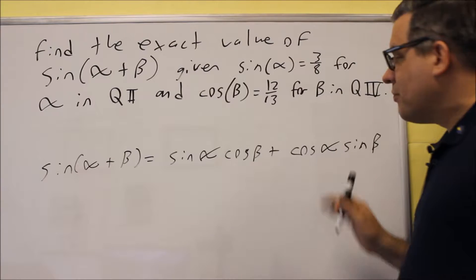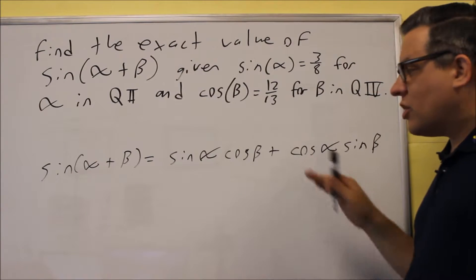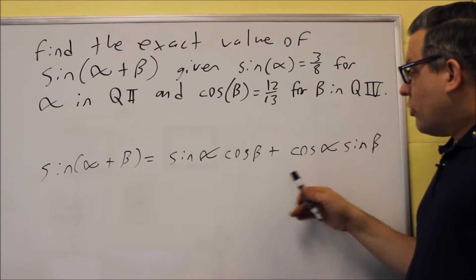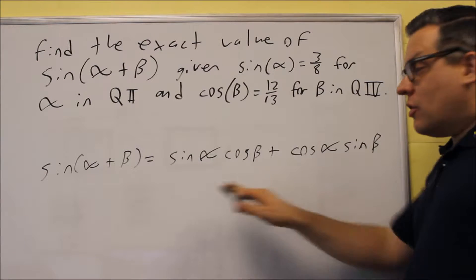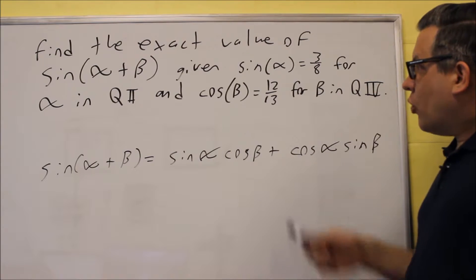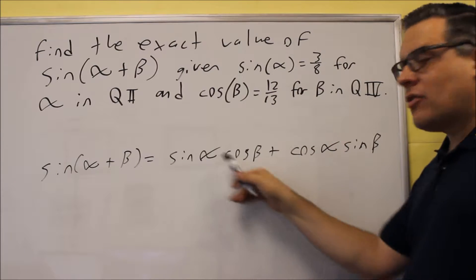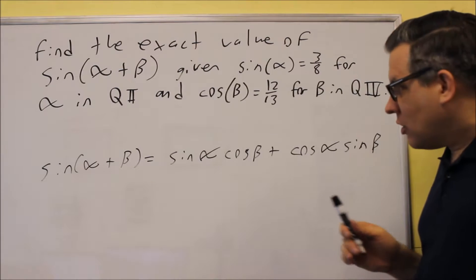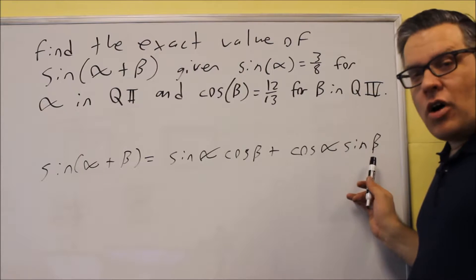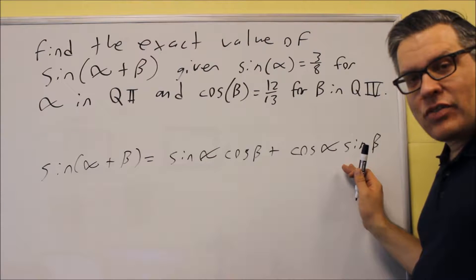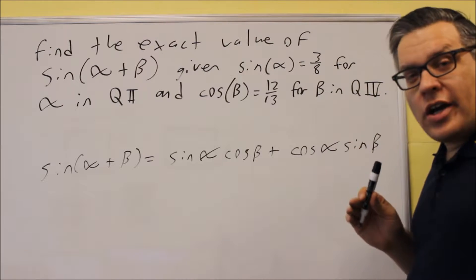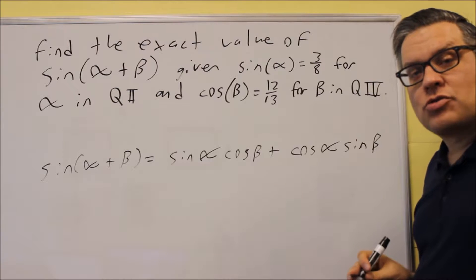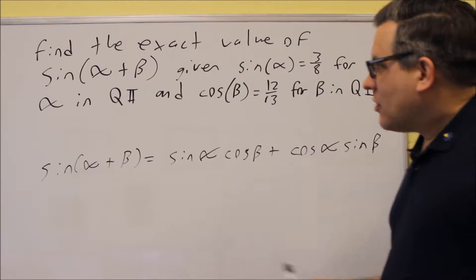That's the summation formula we're using. Now, in order to do this, we have to have values given to plug in for all these. We're given sine alpha and cosine beta, so they actually have the first two. We know that's 3 eighths and 12 thirteenths. However, we don't know what these two are. In order to find these, we're going to have to actually work with some triangles to figure those out. That's actually why they give you these different quadrants, so you can draw some triangles and get the answer.